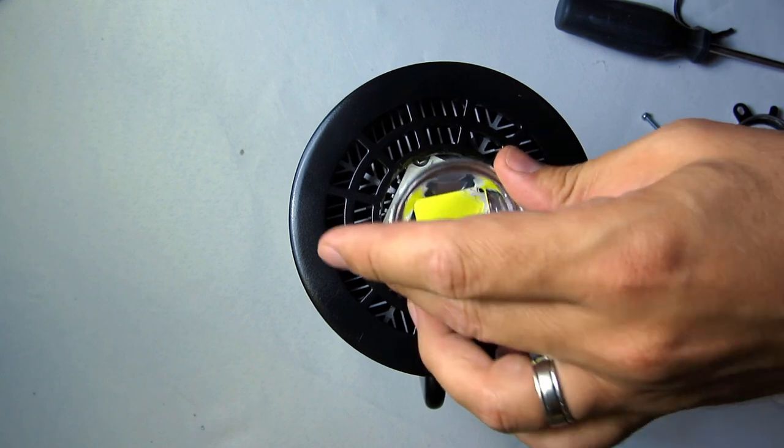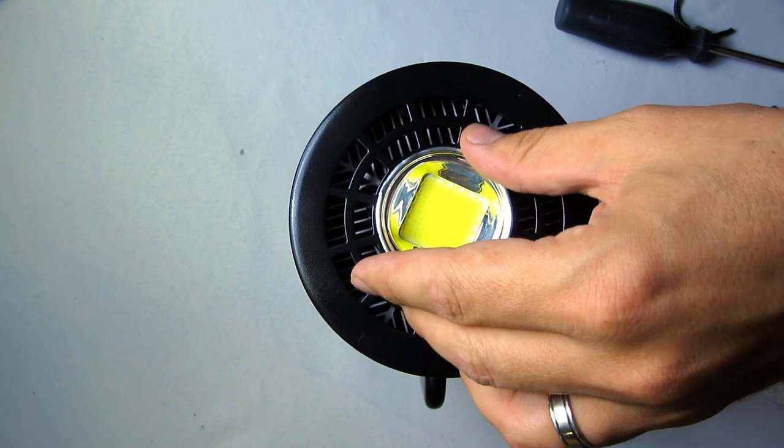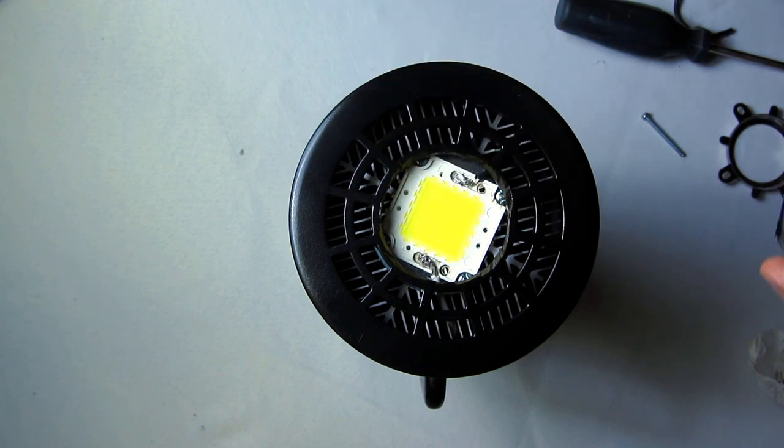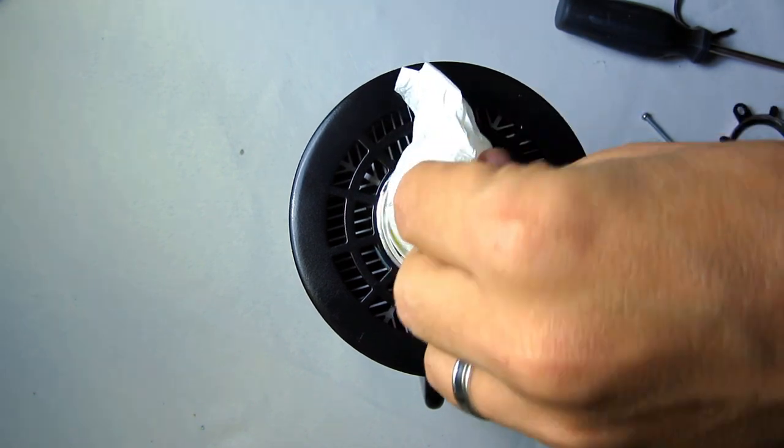To put it together, the reflector goes on first, but oh yeah, this is the last chance we have to clean the LED, so make sure there's no dirt on it. So the reflector goes on, then the lens.